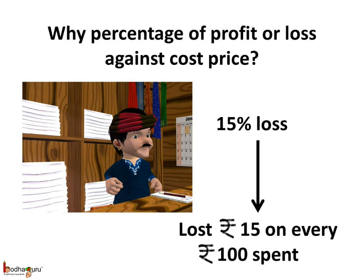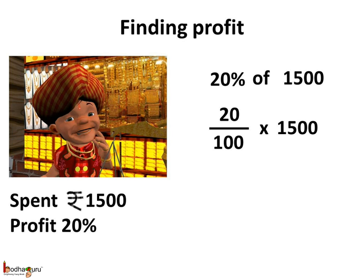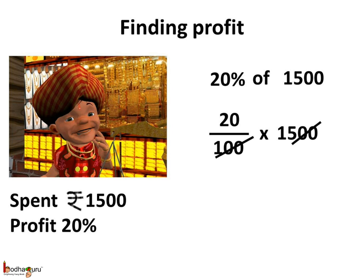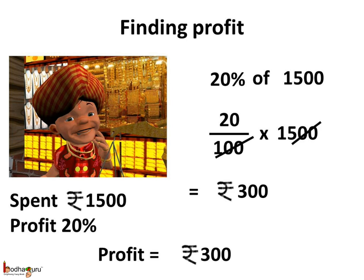It is the cost price which is used to calculate the percentage of profit or loss. Say Jagan earned 20 percent profit spending rupees 1500. How much profit did he make? He made profit equal to 20 percent of 1500, so profit equals 20 divided by 100 multiplied by 1500. Cancelling 100 from numerator and denominator, we get 20 multiplied by 15, thus he made a profit of rupees 300.